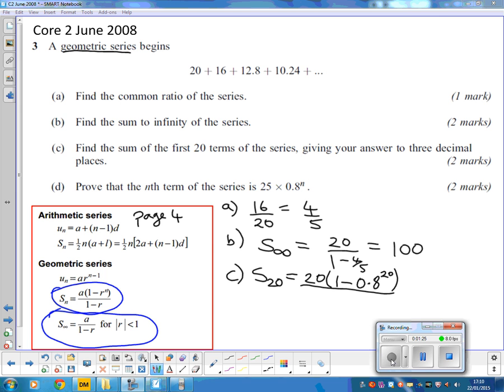which is 20, divided by 1 minus R. Now we put all that in and we get the sum of the first 20 terms is 98.847. I've done that because it said three decimal places.